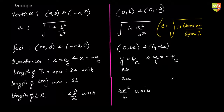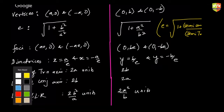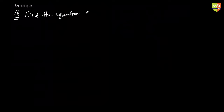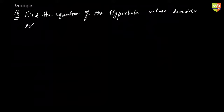Just a quick recap — in case it slipped your mind. Now we'll talk about forming the equation of a hyperbola given its directrix, focus, and eccentricity. Question: Find the equation of the hyperbola whose directrix is 2x + y = 1, whose focus is (1, 2), and whose eccentricity is √3.